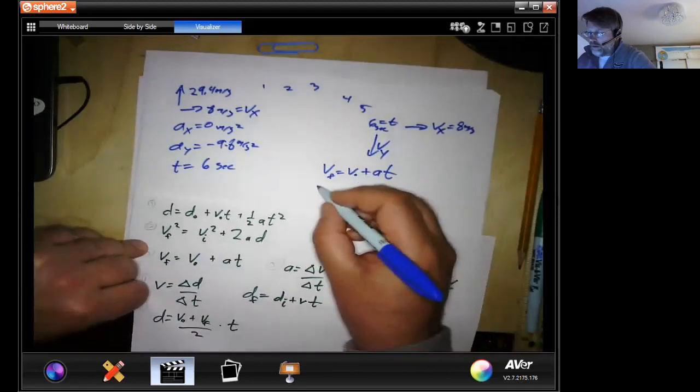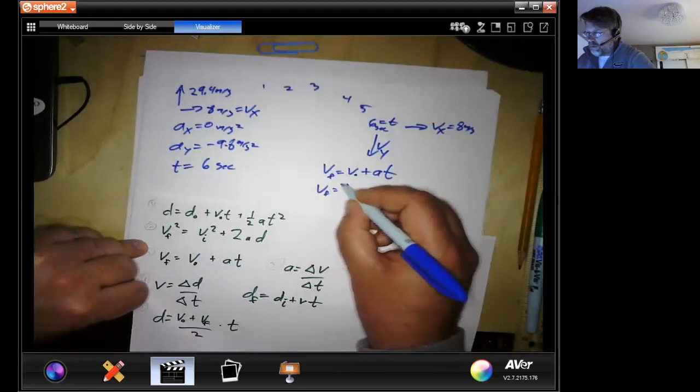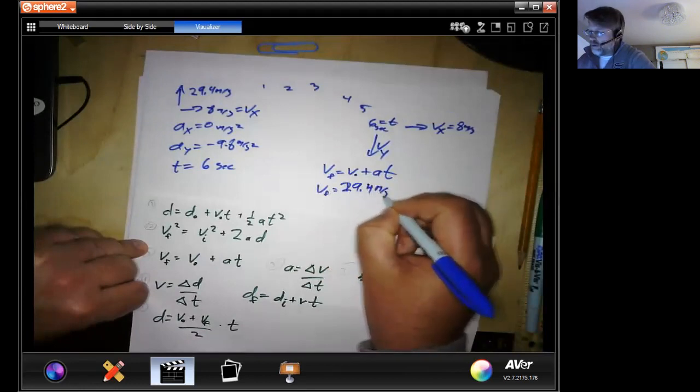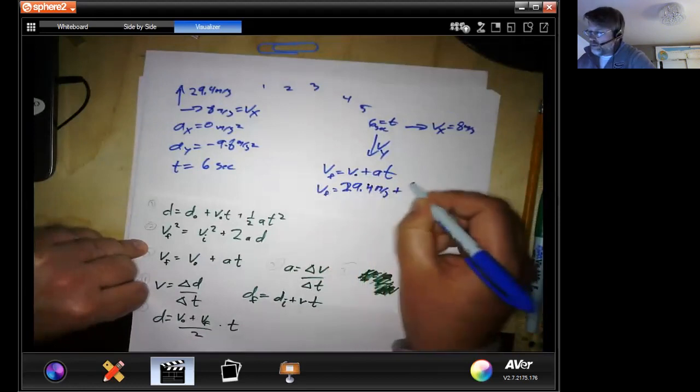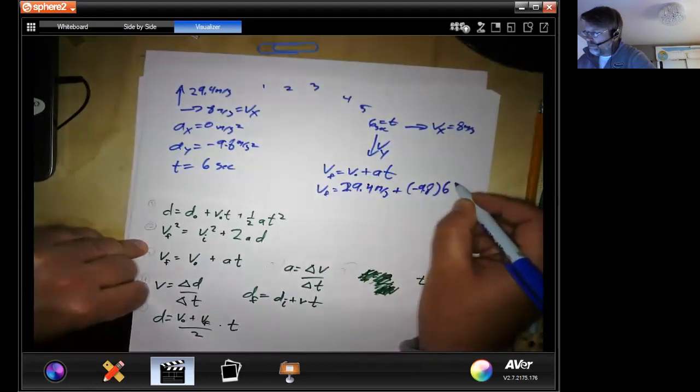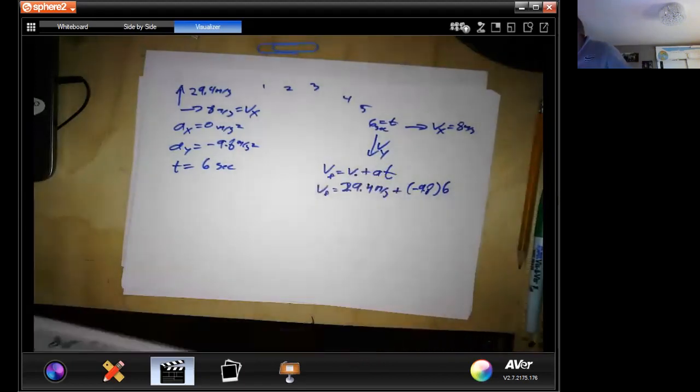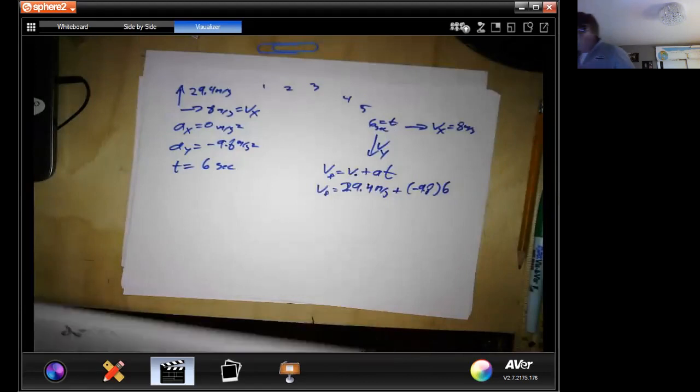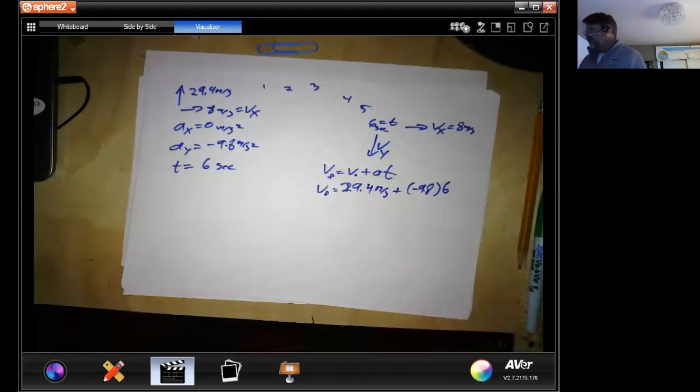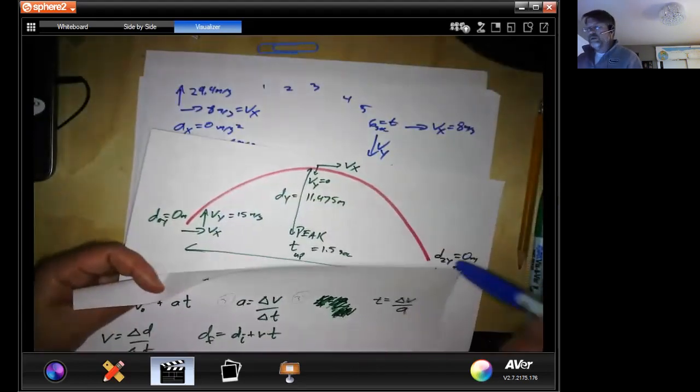All right. So that means our velocity final equals 29.4 plus times six. And again, those of you who have a sharp eye will notice that just like in our other equations, this is symmetric. Which means the amount that's going up at this place is going to be the amount that goes down at this place.